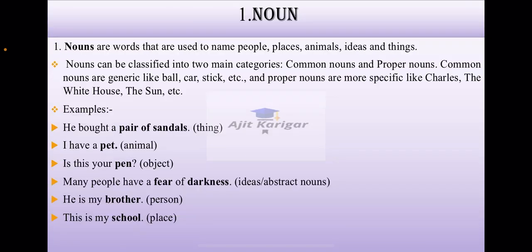Noun. Nouns are words that are used to name people, places, animals, ideas and things. Nouns can be classified into two main categories: common nouns and proper nouns. Common nouns are generic like ball, car, stick, etc. And the proper nouns are more specific like Charles, the White House, the Sun, etc.